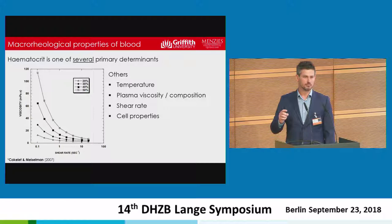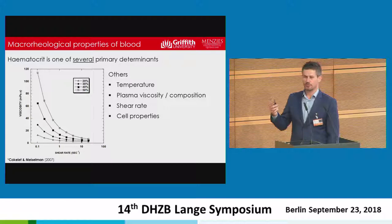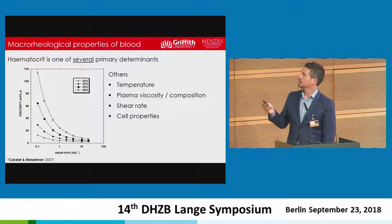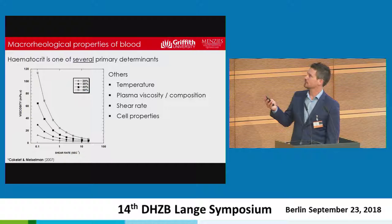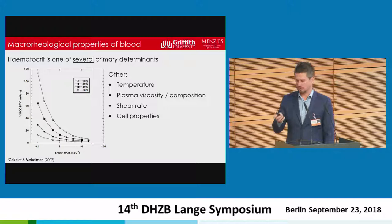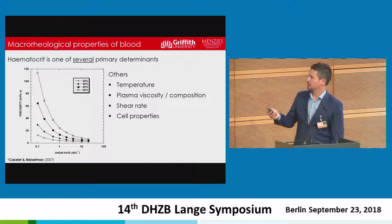Hematocrit does not always predict blood viscosity. If we look pre and post intervention at just hematocrit, it's actually a very poor proxy for fluid properties. Other factors matter: temperature, plasma viscosity — plasma makes up 50–60% of total volume, so its composition does dictate blood viscosity. Dehydration makes us quite aware that viscosity is sensitive to plasma viscosity itself. Increasingly important are the properties of the cells themselves — the very minute physical properties of erythrocytes that explain why blood is a shear-thinning fluid.